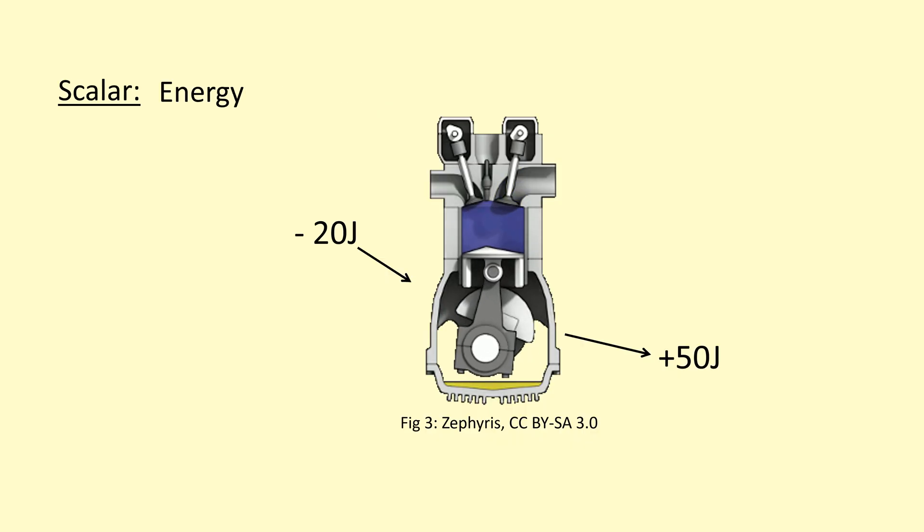Another example of a scalar is energy so here we've got an engine inputting minus 20 joules of energy and then getting out 50 joules of energy. A common mistake that students make is that they think just because a quantity can be positive or negative that makes it a vector, not necessarily. In this case minus 20 might mean that you're using up 20 joules of energy while you're gaining 50 joules of energy, so that doesn't mean it's a vector, it doesn't mean it's pointing in a direction.